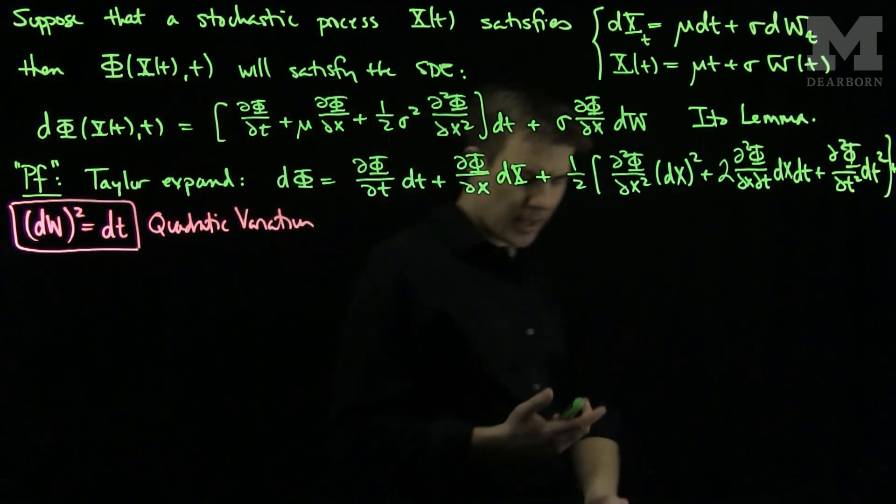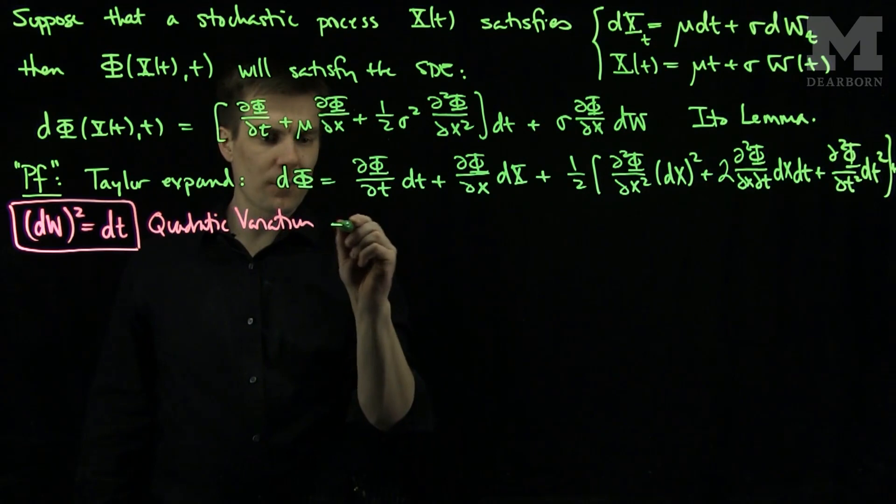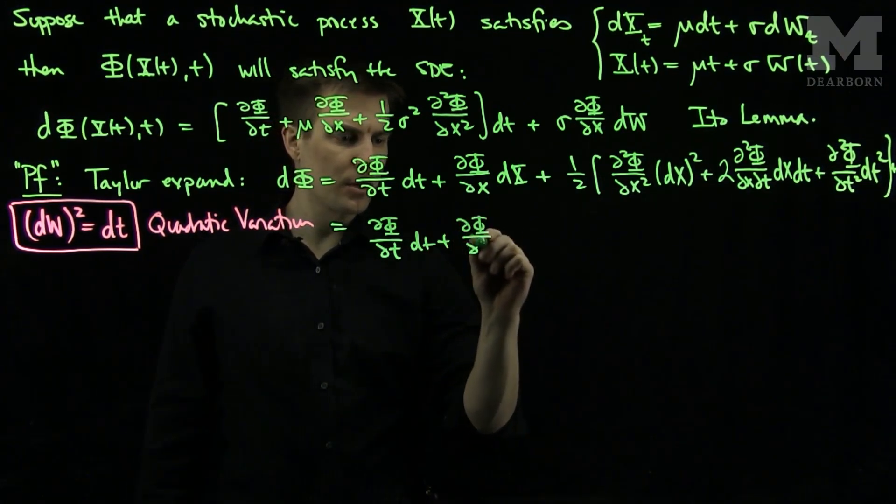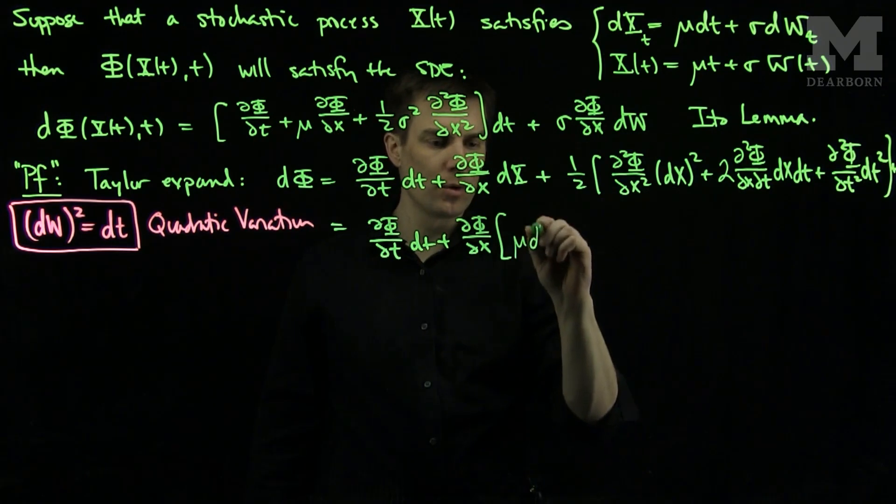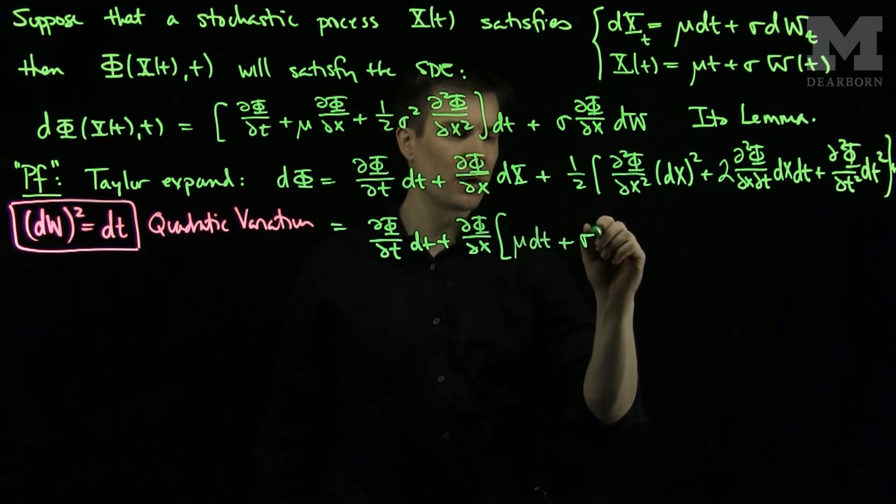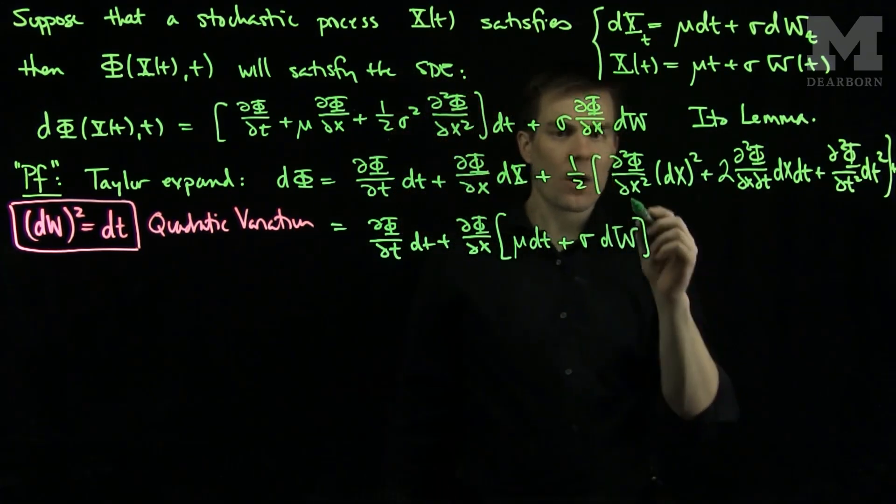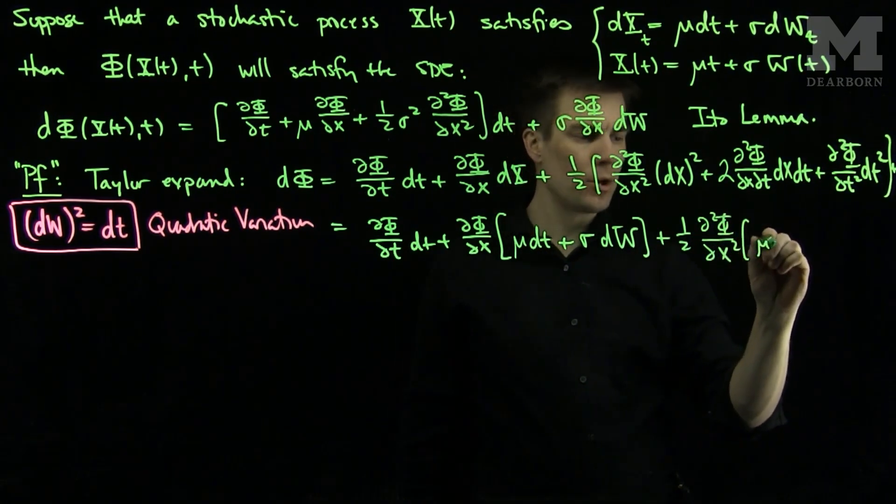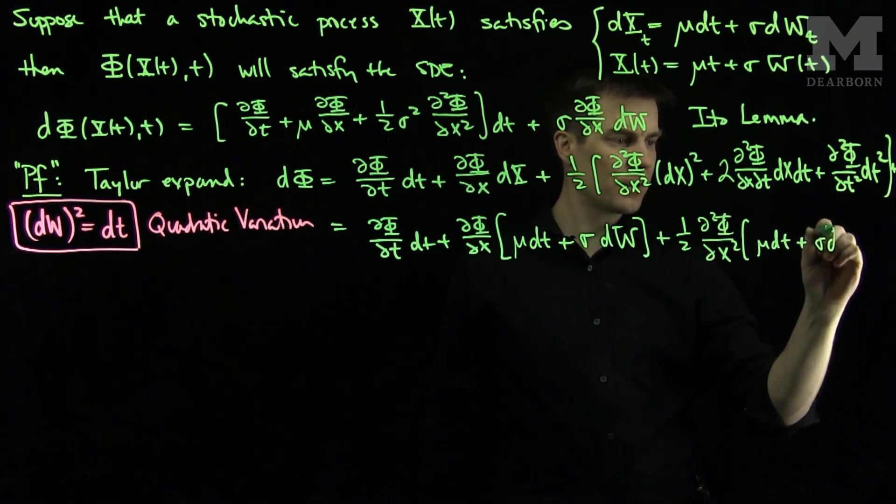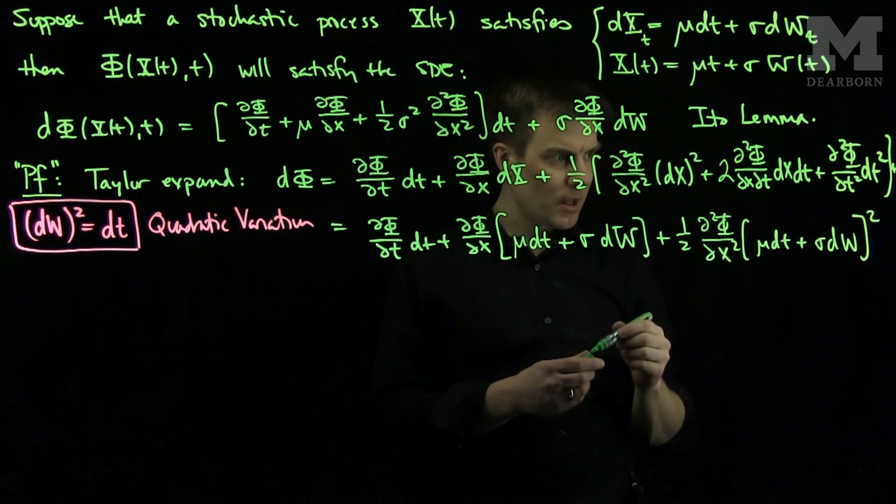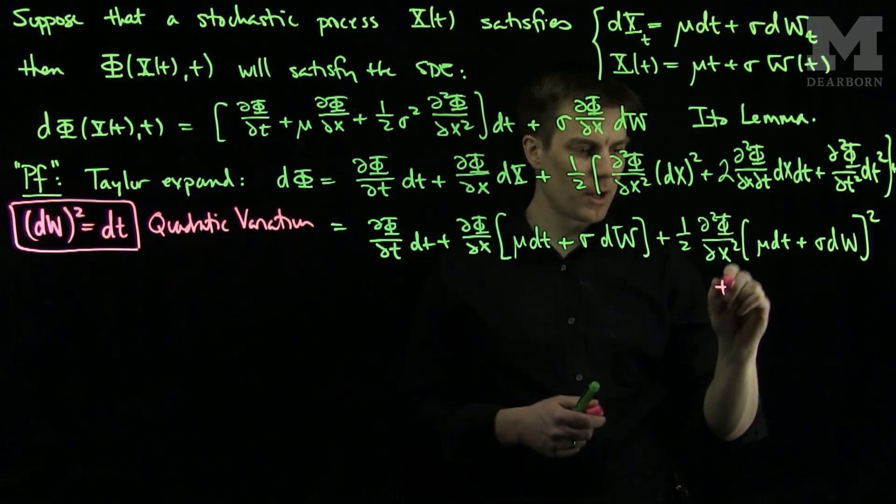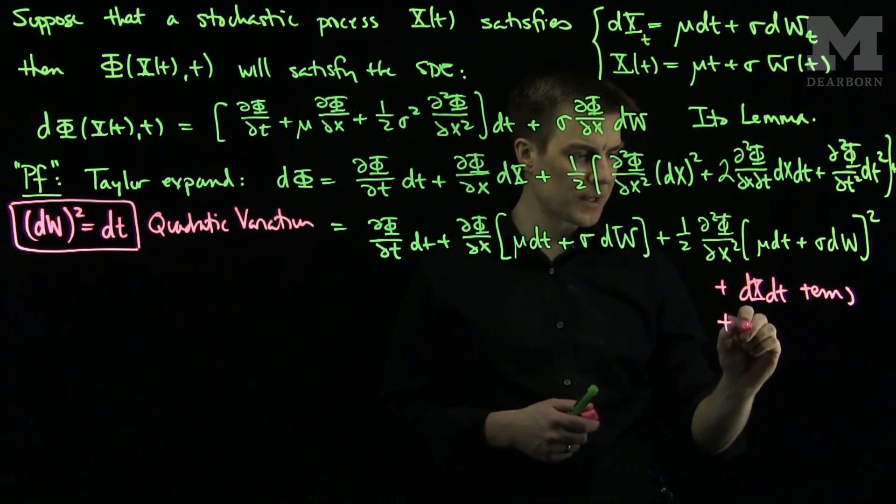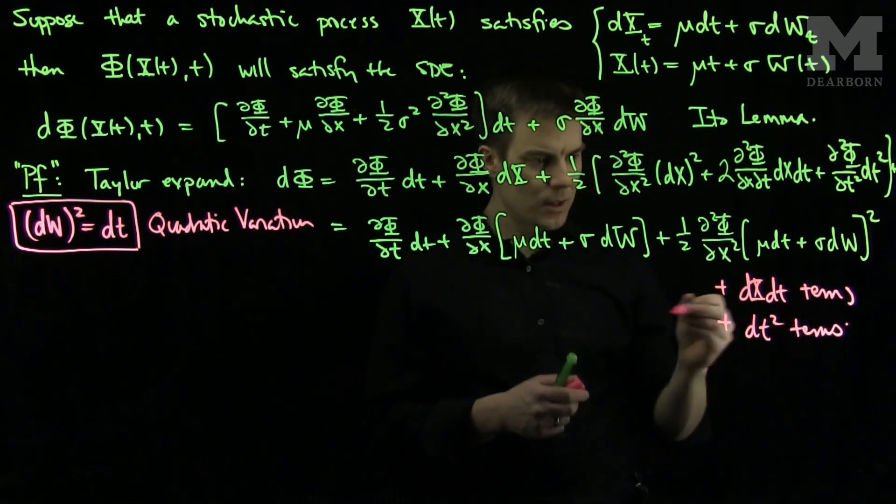So we'll use this fact, and now we'll expand this out. So our formula will be ∂φ/∂t dt + ∂φ/∂x, and now we use what dx is. It is μdt + σdw, and now we will have a (1/2)∂²φ/∂x², and then (μdt + σdw)². And then we will also have the other terms. We will have the plus dx dt terms and the plus dt² terms.